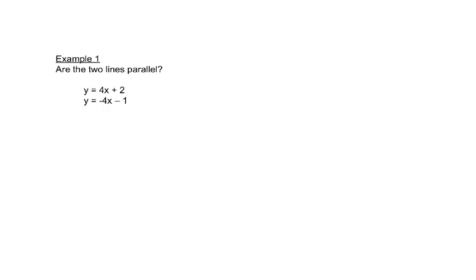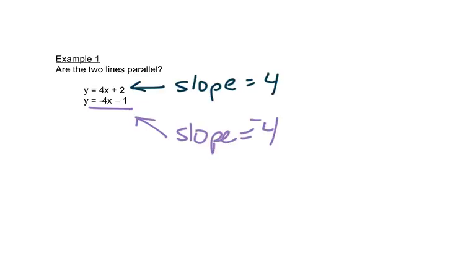So let's look at these two equations. The slope for this equation is 4. And the slope for this equation is negative 4. These are not the same slopes, so they are not parallel.